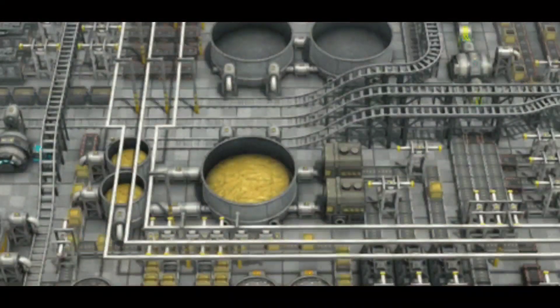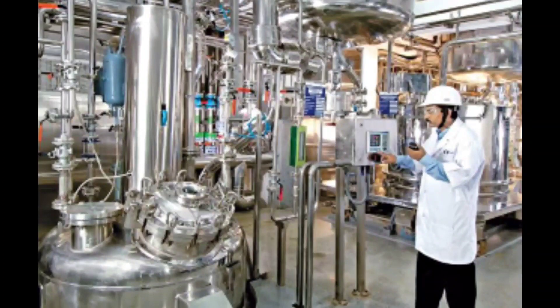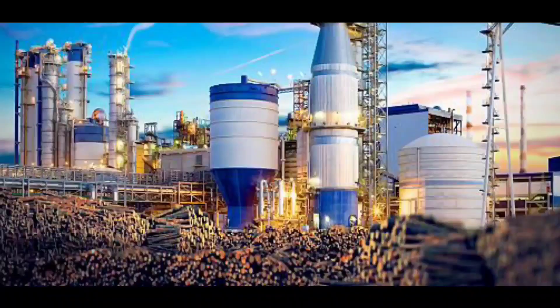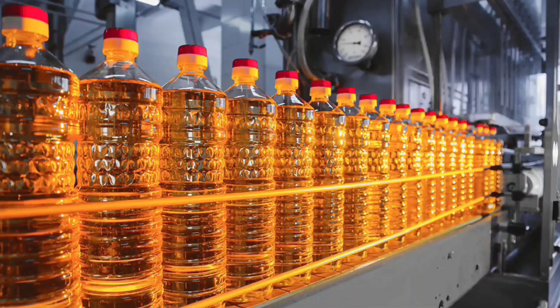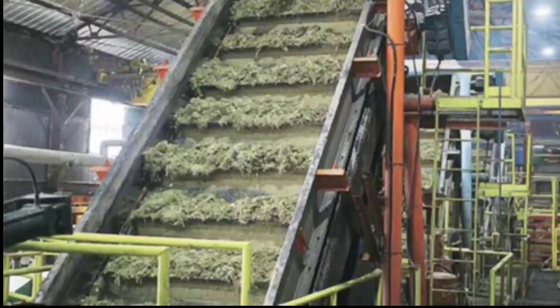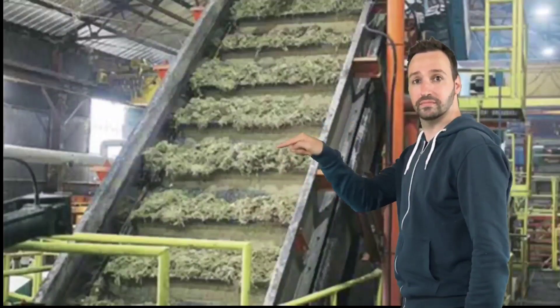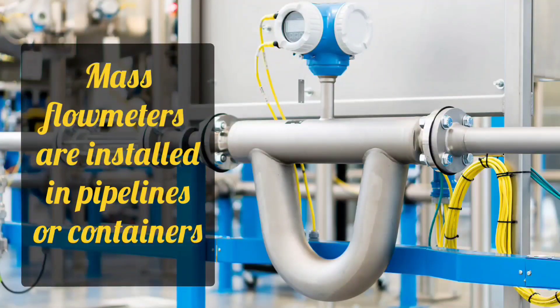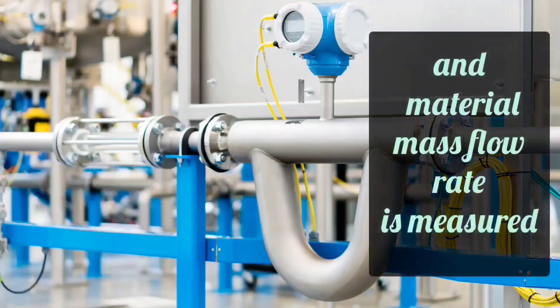Mass flow meters are used in process control, oil and gas, chemical processing, automotive production, food production, sugar industry, and in other industries. Mass flow meters are installed in pipeline or in other containers, and the mass flow rate of the material is measured.